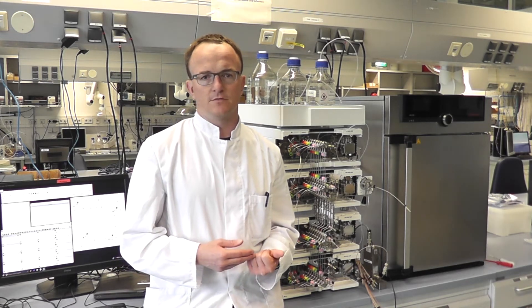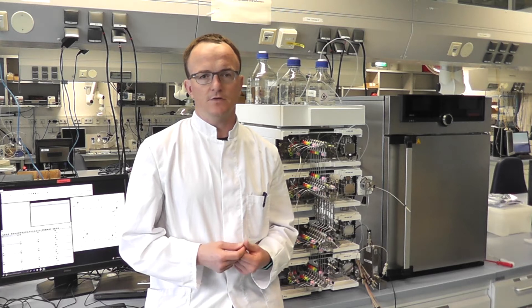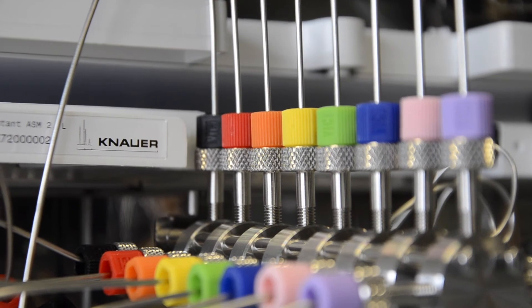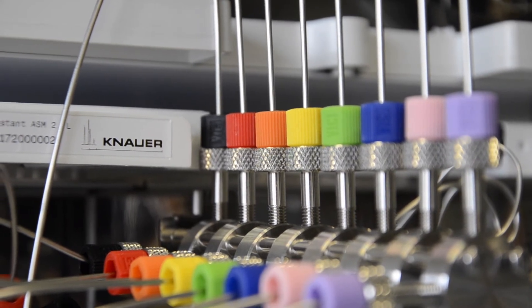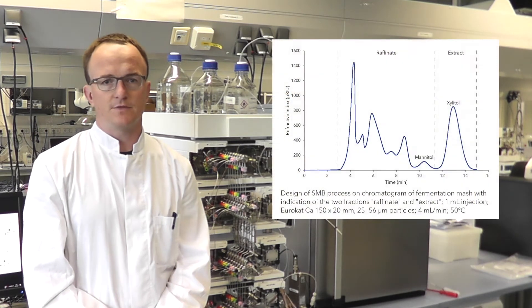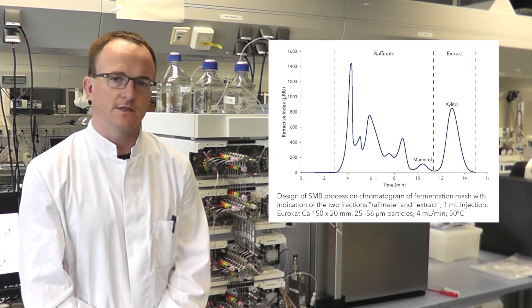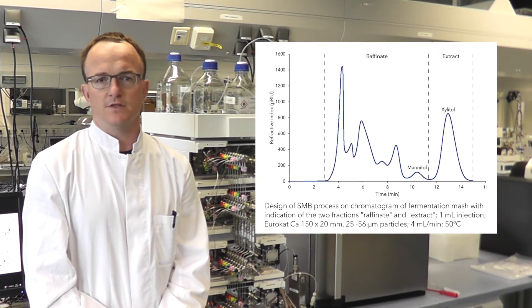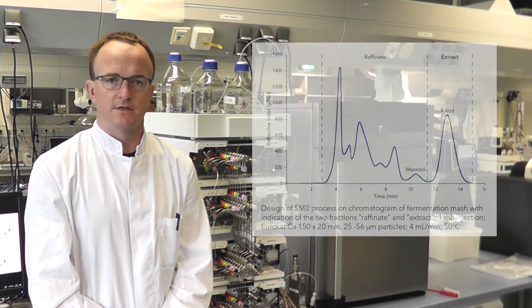The separation is done in isocratic mode, which is how normal SMB processes also run. We used Eurocut columns, which are commonly used in SMB processes. Our target substance eluted at the end of the chromatogram, making the separation of silitore from the rest straightforward. Therefore, a one-step SMB process was feasible.